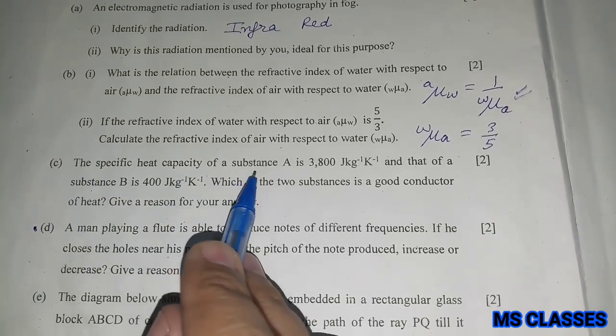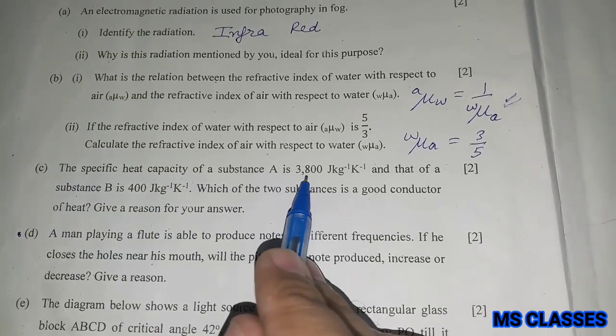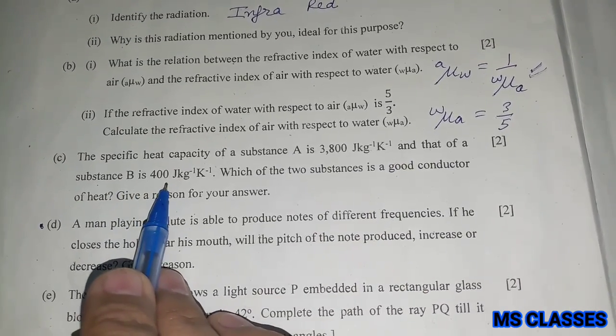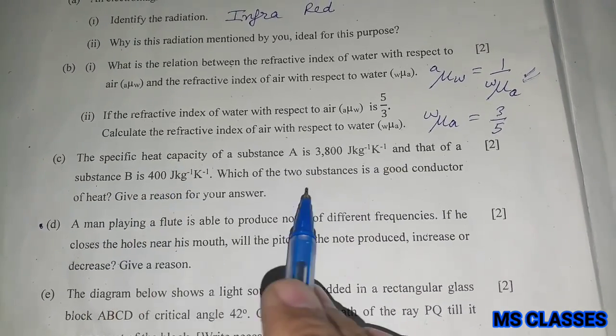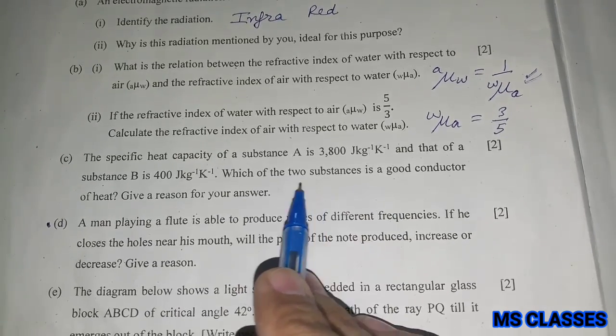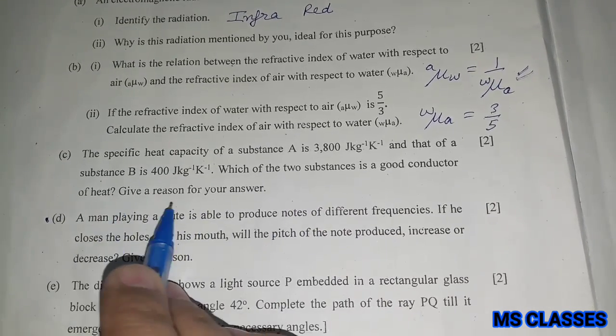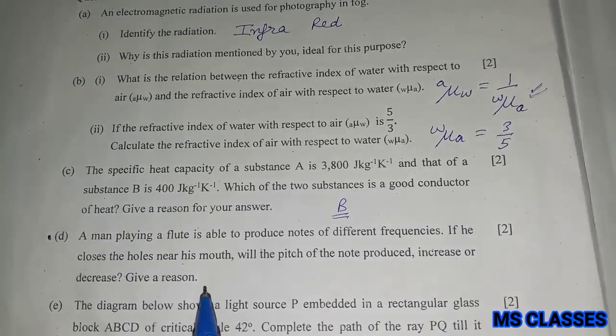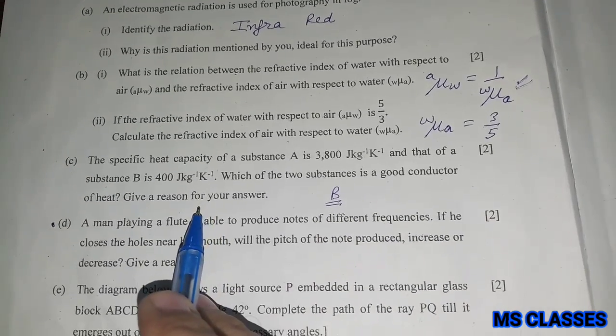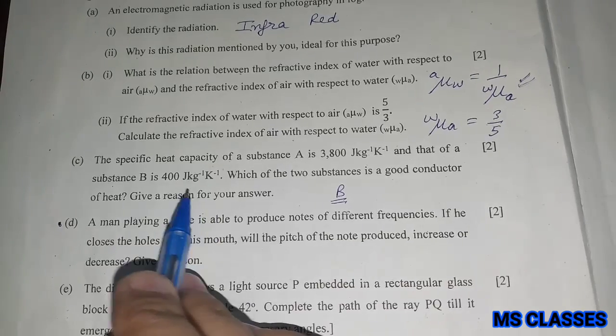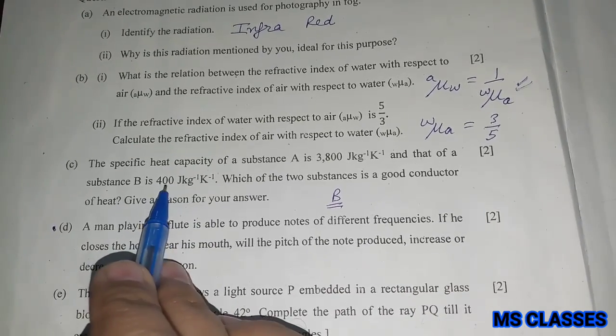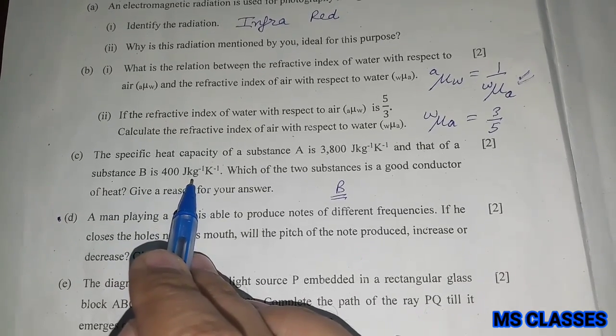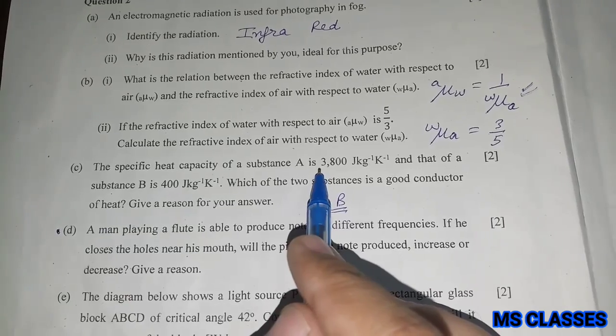The specific heat capacity of a substance A is 3800 joule per kg per Kelvin and that of a substance B is 400 joule per kg per Kelvin. Which of the two substances is a good conductor of heat? Give a reason for your answer. So here B substance will be having good conductivity because here just only 400 joule energy is required to raise the temperature of 1 kg by 1 Kelvin, whereas for the substance A, 3800 joule of energy is required to do so.